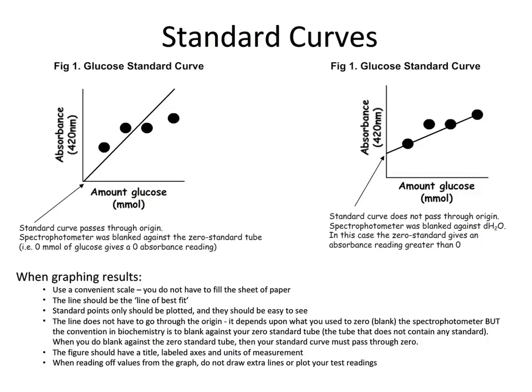Depending on your spectrophotometer, you can zero your readings, in which case zero millimolar of your standard gives a zero absorbance reading. If you do this, you would expect your standard curve to pass through the origin of the plot. If you do not zero your standard, then do not expect your standard curve to pass through the origin.